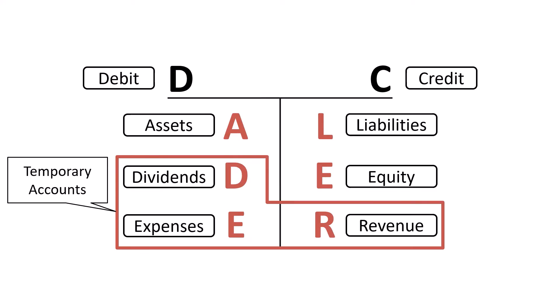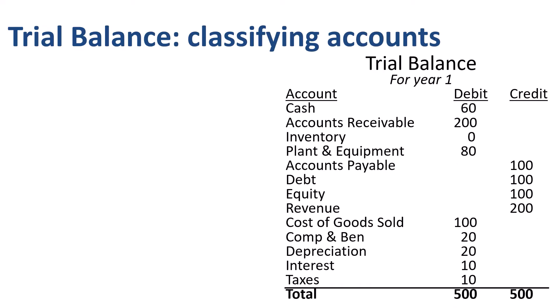The starting point for our closing entries is this example of a trial balance after corrections. A trial balance is a listing of all ledger accounts along with their respective debit or credit balances for the period. Let's classify each of the accounts in the trial balance as either permanent or temporary. Cash, accounts receivable, inventory, and plant and equipment are all asset accounts — these are permanent accounts. Accounts payable and debt are liability accounts — these are permanent accounts.